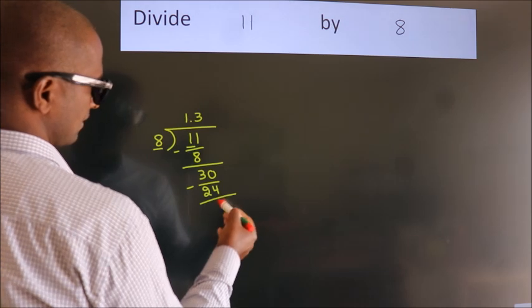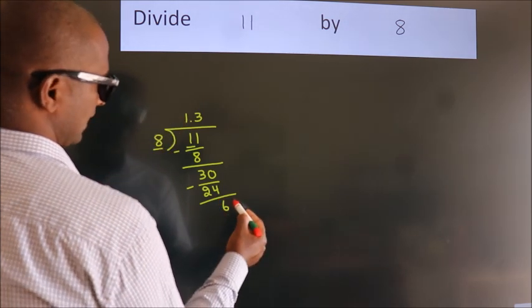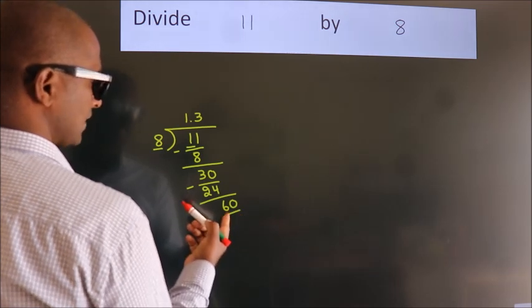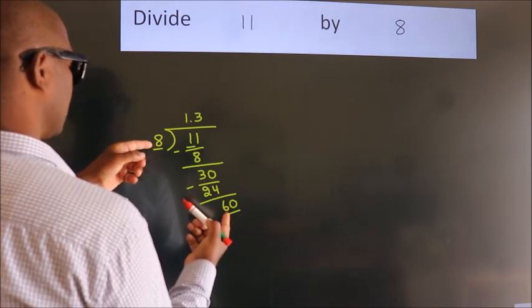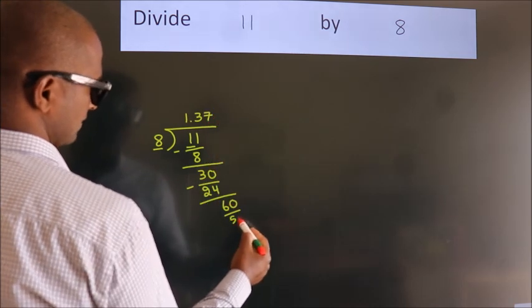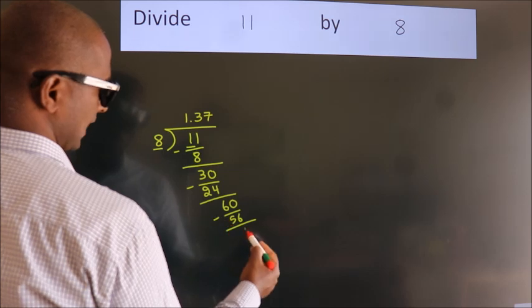After this, we already have the decimal, so directly take 0. So, 60. A number close to 60 in the 8 table is 8 times 7, which is 56. Now we subtract and get 4.